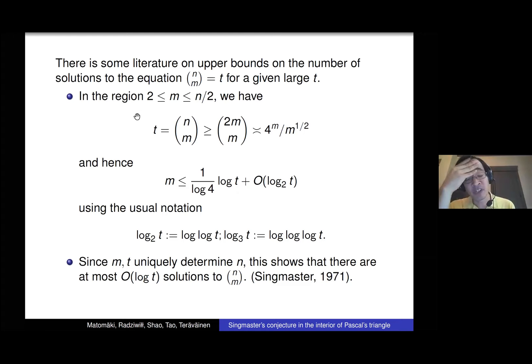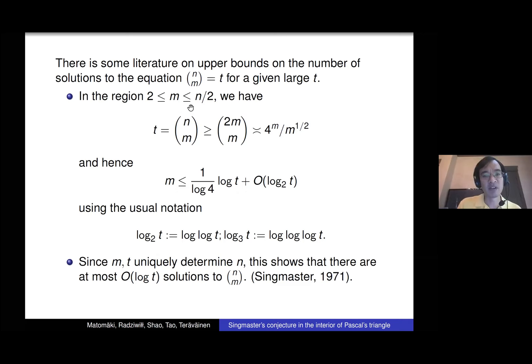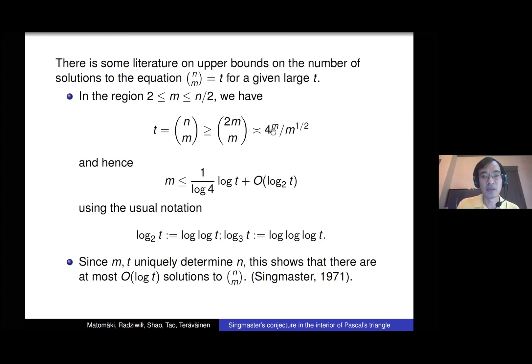People have also tried to bound how many solutions there are. Singmaster's conjecture says that for a fixed t there's only a bounded number of solutions, but that's not proven. There are some upper bounds: a very simple one is that once you're in the left half of the triangle, if m is small and you want to solve t = n choose m, then n is at least 2m. So n choose m is at least 2m choose m, and Stirling's formula tells you 2m choose m grows exponentially in m — basically 4^m.